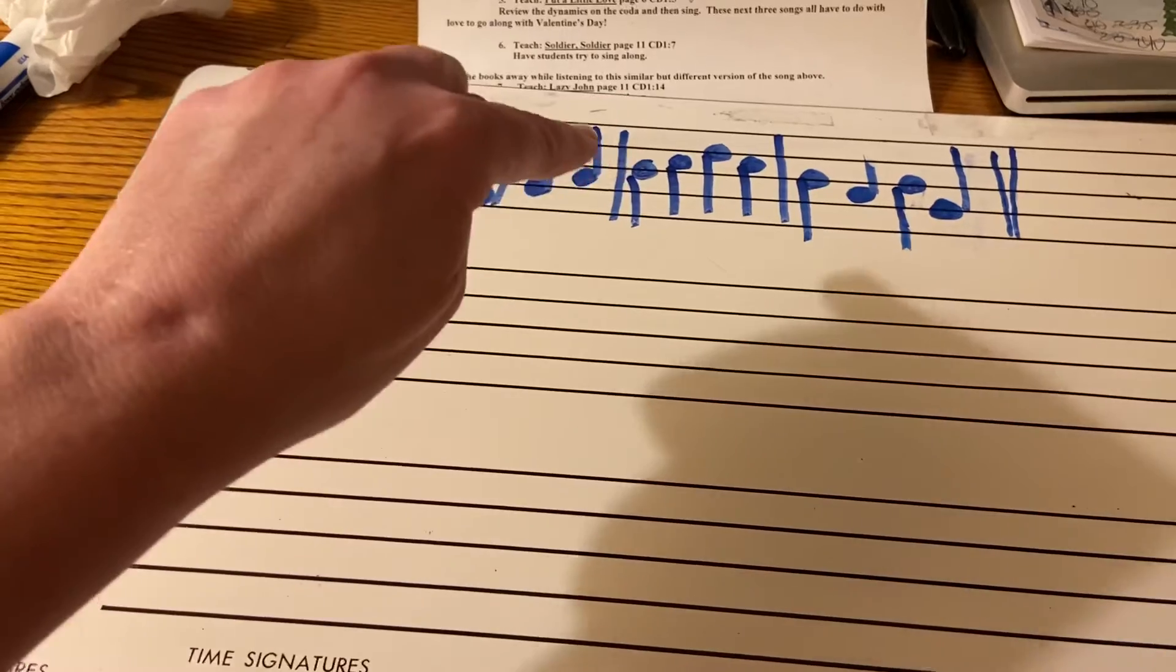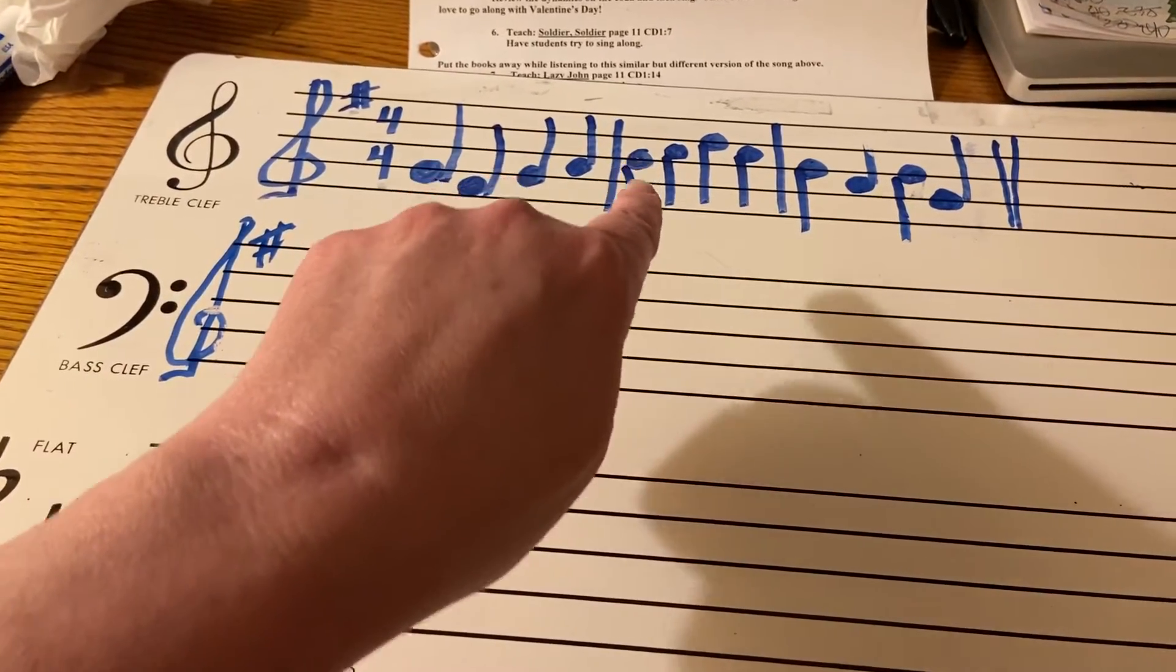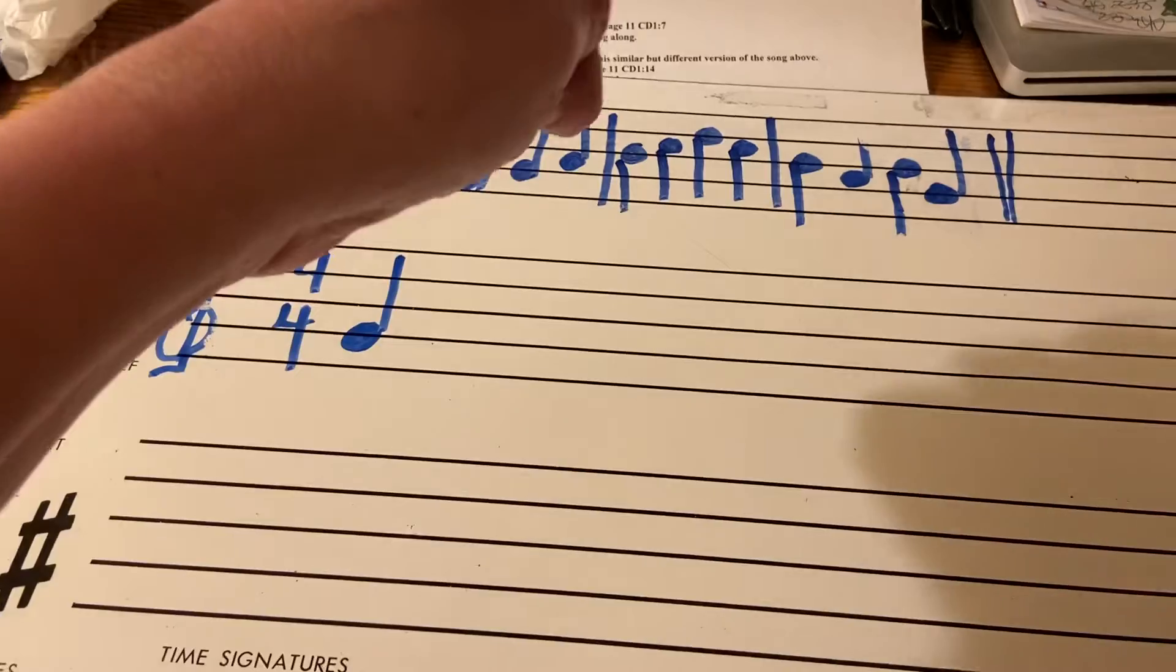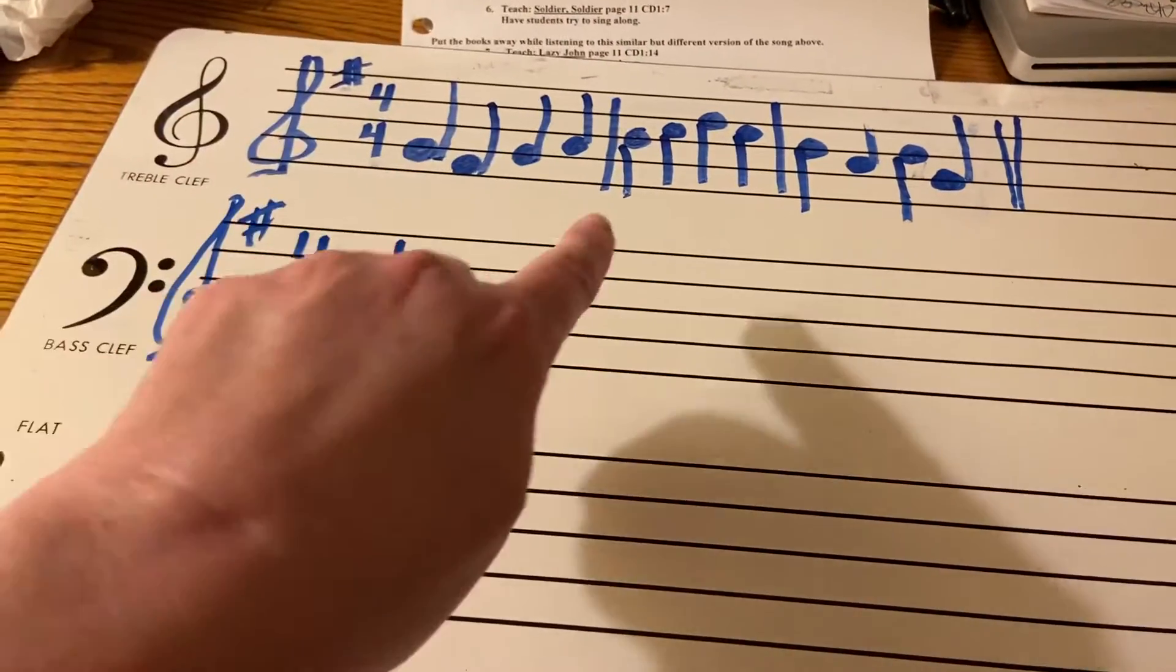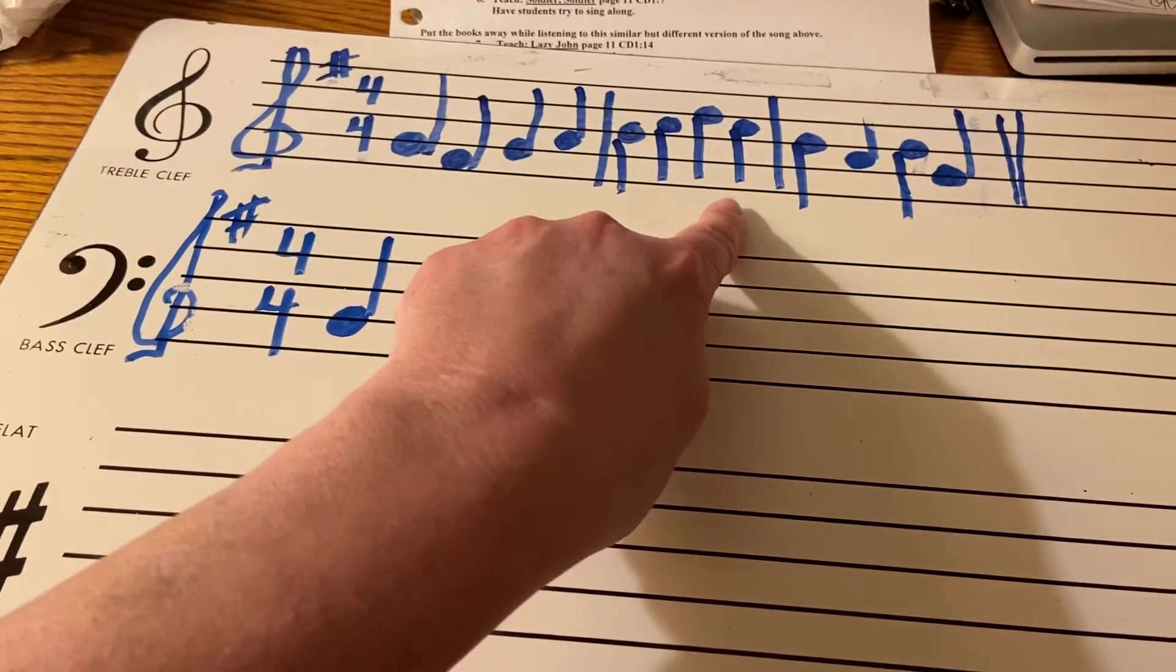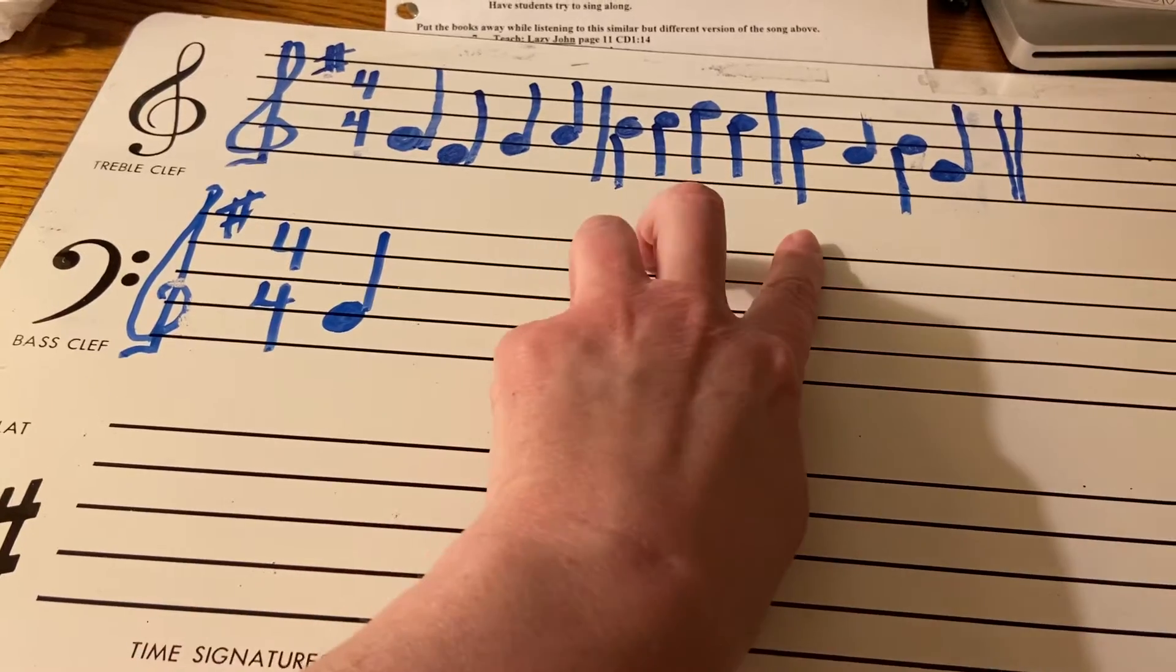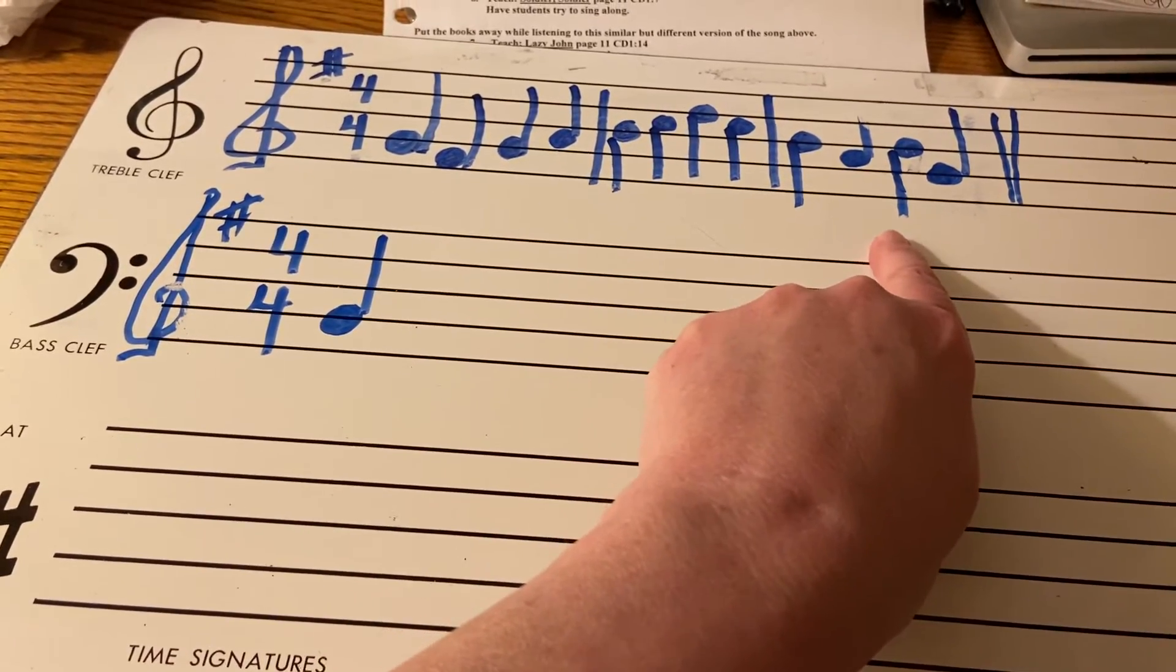If the circle part of the note, like this one here on the third line up, is on the third line or above, the stem goes down and on the left, as you see with these four, five notes right here, and then this one too, because it went up to the third line.